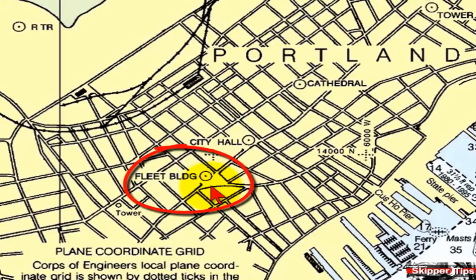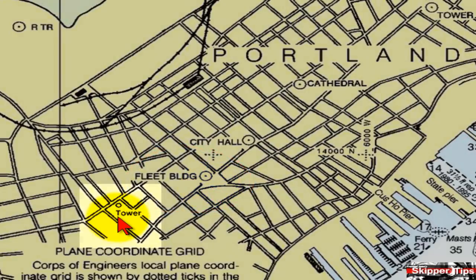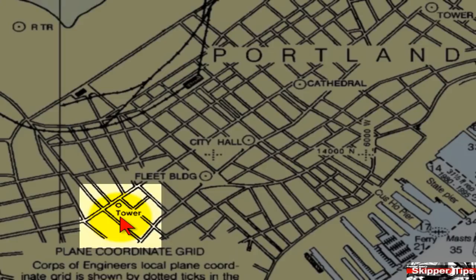These objects have been surveyed to a high degree of accuracy for safe navigation. Objects on a nautical chart with a lesser degree of accuracy are shown with a small open circle, and the name will not be in all capital letters.